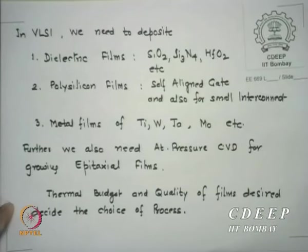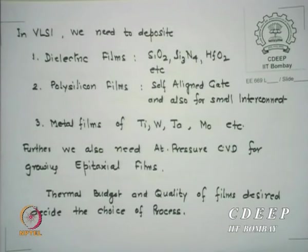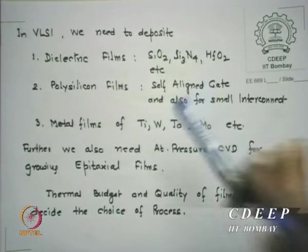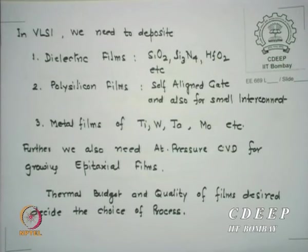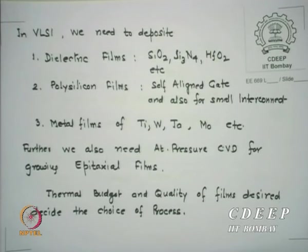So it is a huge investment unless you are really working on LEDs. These are the possible CVD techniques. What films do we need in VLSI? We need dielectric films of SiO2, silicon nitride, hafnium oxide, and many such high-K materials like lanthanum oxide, gallium oxide, and others. Polysilicon films for self-aligned gates and small interconnects. Pure polysilicon films are rarely used now — they are used as silicides with molybdenum or titanium.